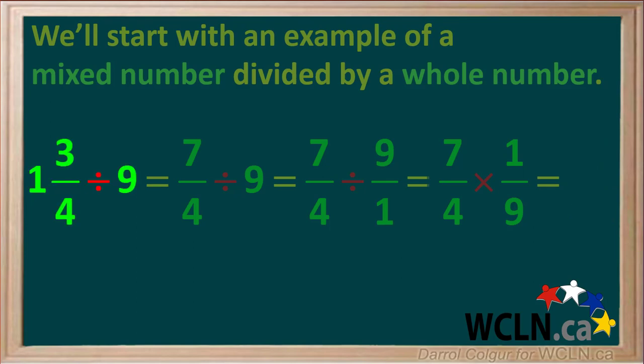We can summarize by stating that one and three quarters divided by nine is equal to 7/36. 7/36 is a proper fraction, so we leave it as it is.